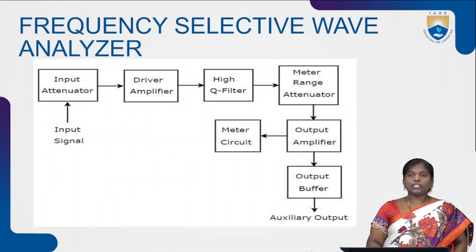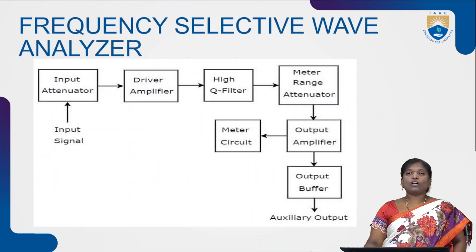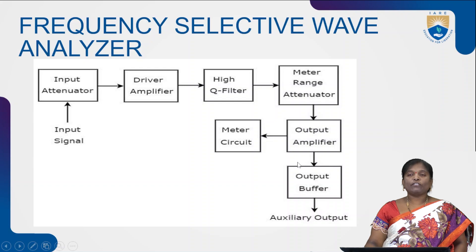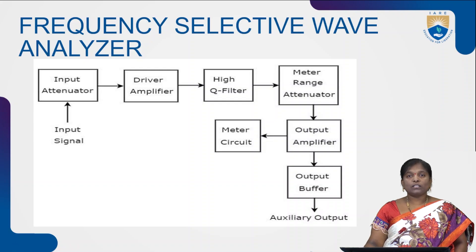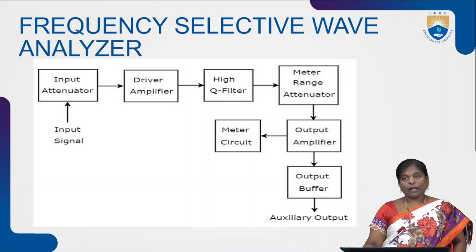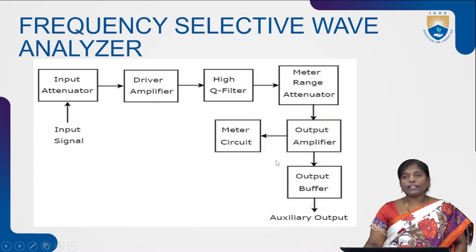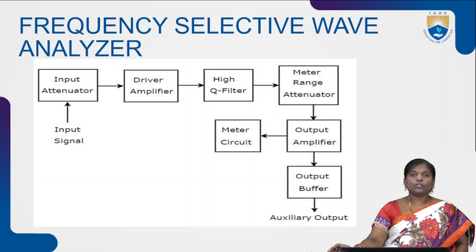This is the block diagram representation of the frequency selective wave analyzer. It consists of an input signal, attenuator, driver amplifier, high-Q filter, meter range attenuator, output amplifier, meter circuit, and output buffer. Finally, we obtain the auxiliary output.